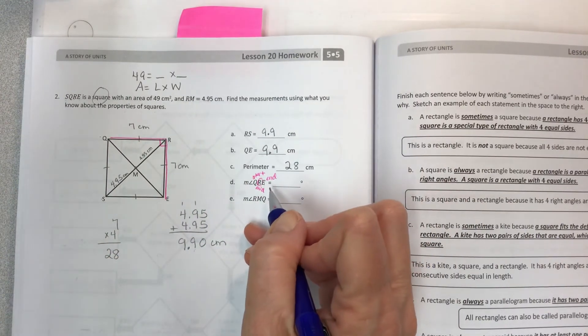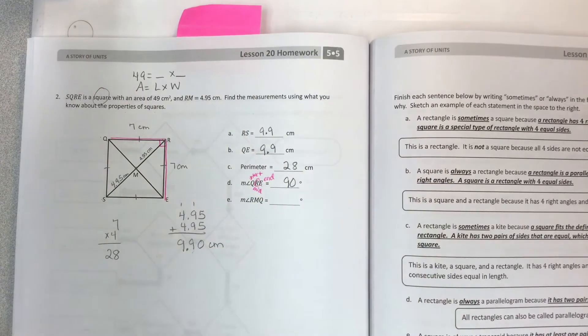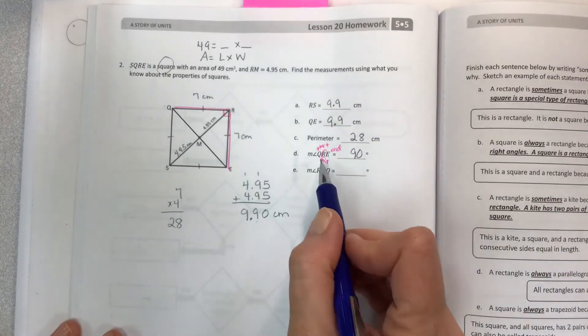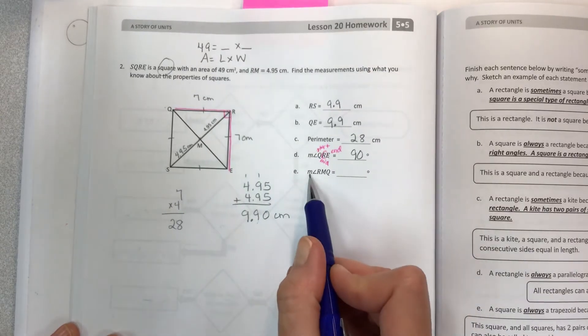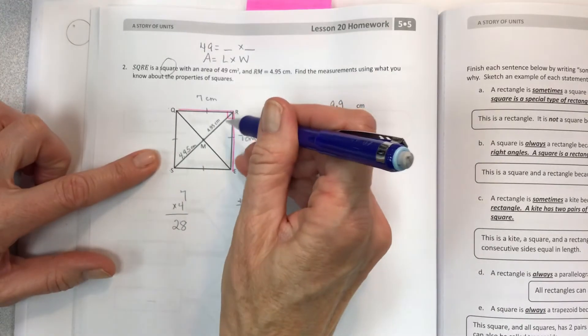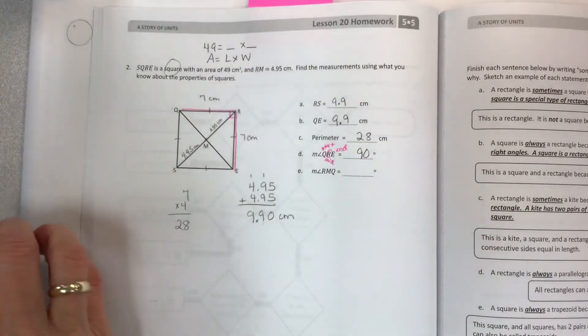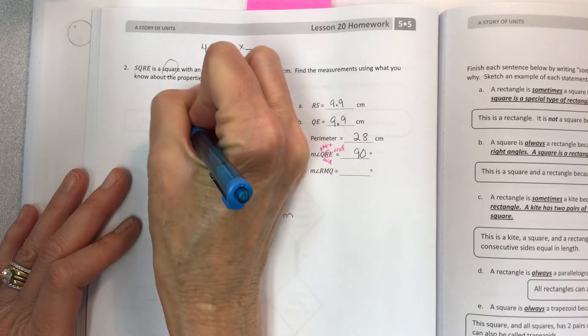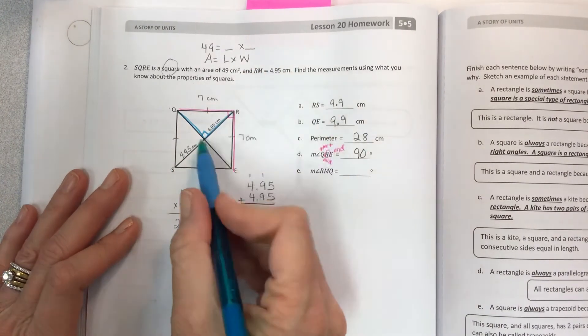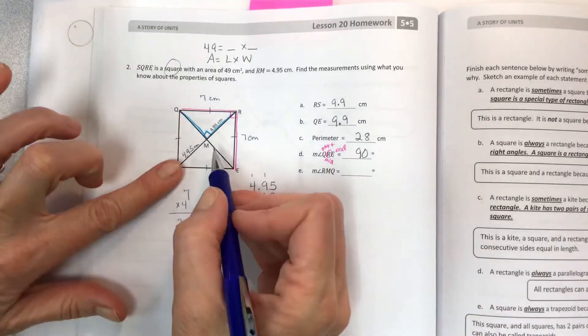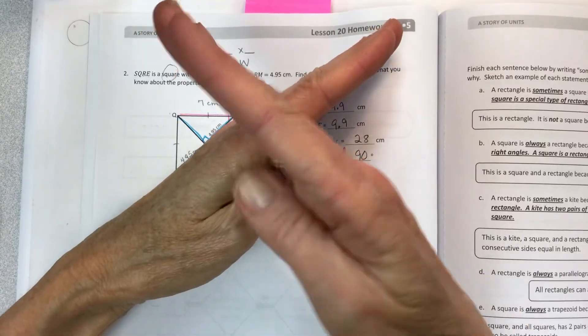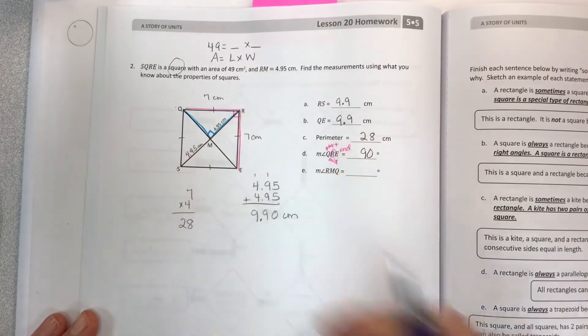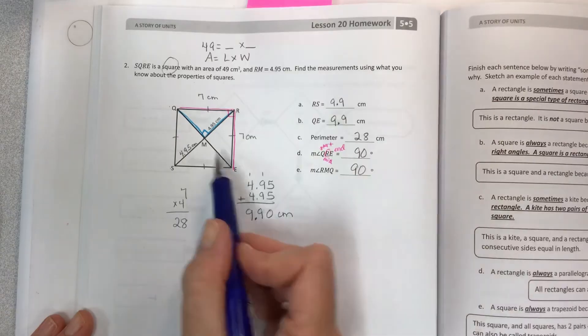So the property of a square is that it must have four 90-degree angles. And the measure of angle RMQ—R, M, Q—so that's this one starting at R, going to point M, and then out here to Q. So what is that angle? And then knowing that the attributes of a square are that the diagonals cross at perpendicular points, they're making a perfectly 90-degree angle. That's an attribute, so it's something you can count on. It's going to happen every single time.